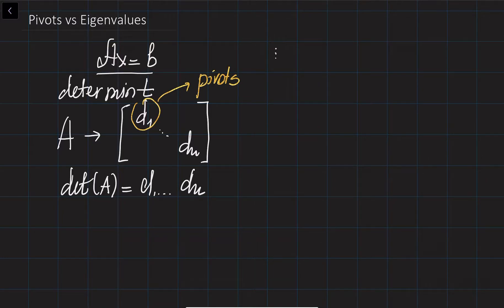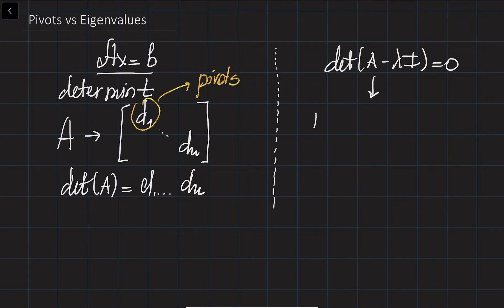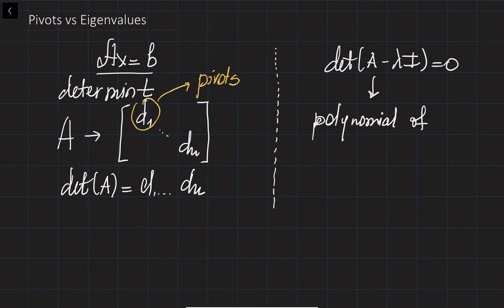In a conceptually different part of the course, we discussed about eigenvalues, which are found by solving the characteristic equation. Essentially, the determinant of (A minus lambda I) equals zero leads to a polynomial — called the characteristic equation — of degree n.